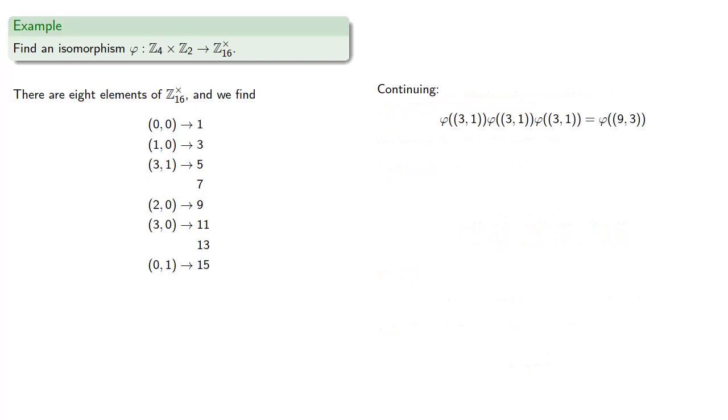And continuing, we might find phi of (3, 1) cubed, well that's really the same as phi of (9, 3), or phi of (1, 1). Over on the left-hand side, that's 5 by 5 by 5, or 13. And that gives us a new assignment.